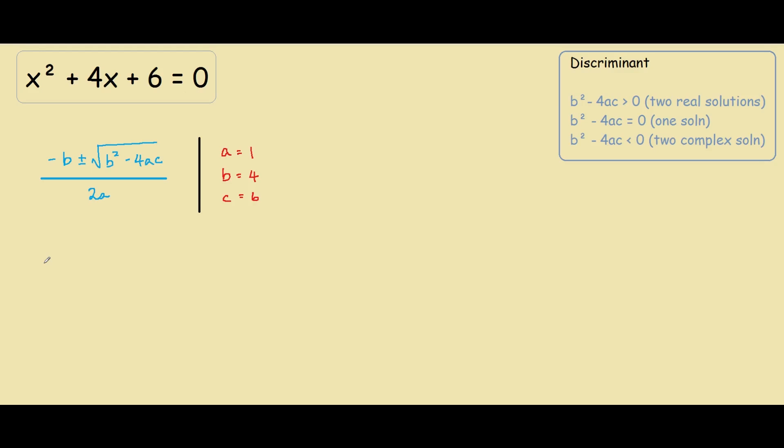So let's go ahead and put these values into the equation. We have negative 4 plus minus, b squared is 4 squared, so 16, minus 4 times 1 is 4, times 6 is 24. This is 4ac. Over 2 times 1 is 2.